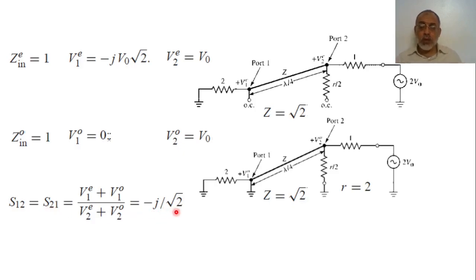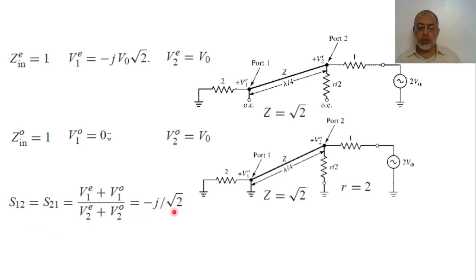By following similar steps but subtracting instead of adding the even and odd modes, we can obtain S13 equals S31 equals minus j over square root two. So S12, S21, S13, and S31 all have the magnitude of minus j over square root two.